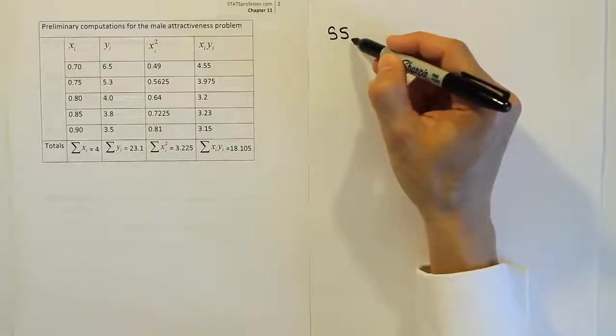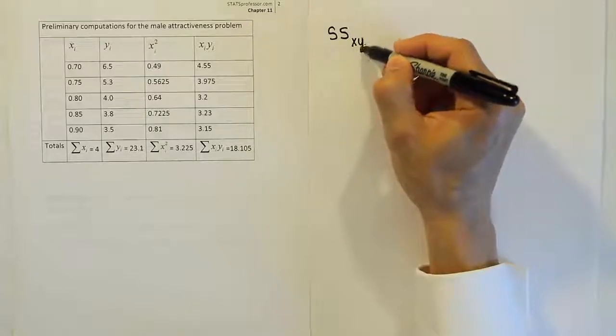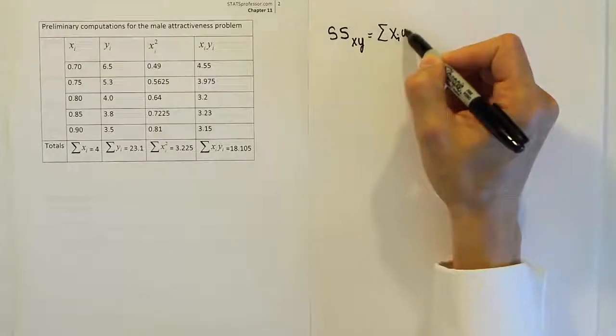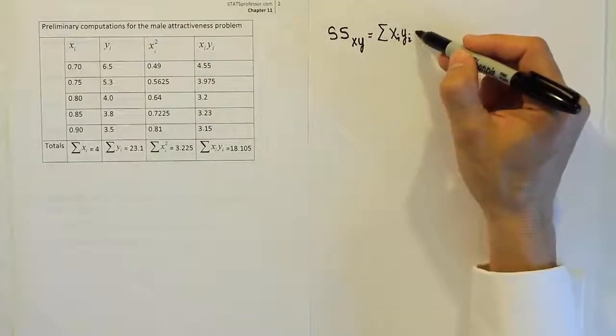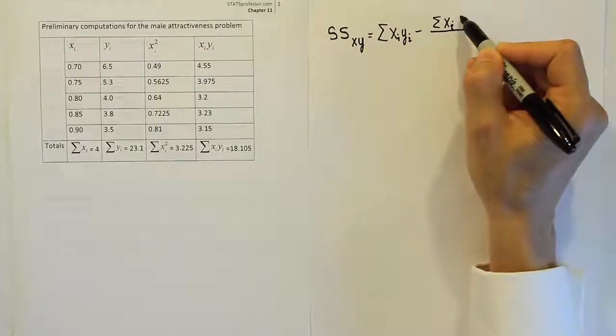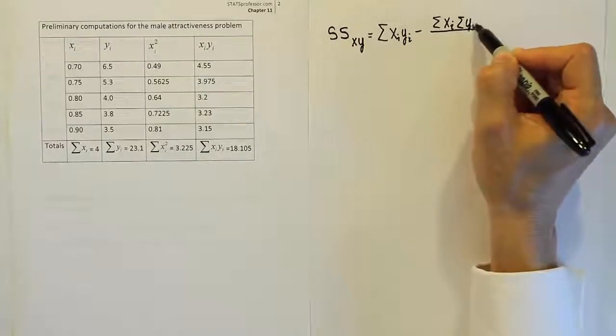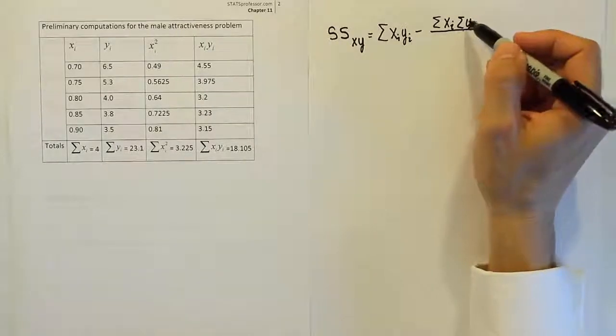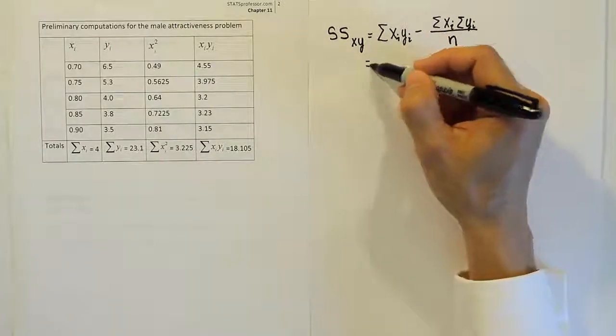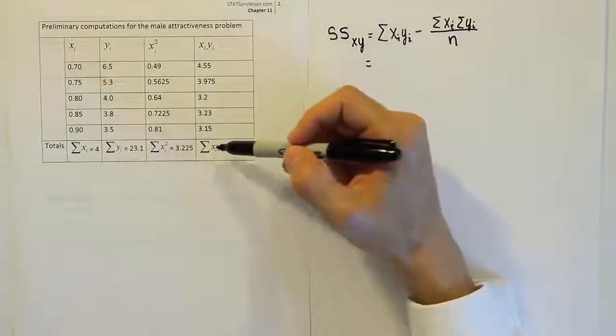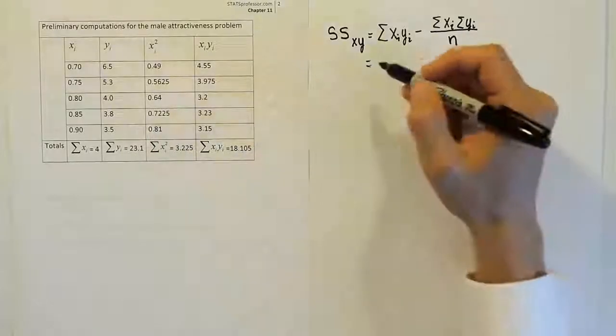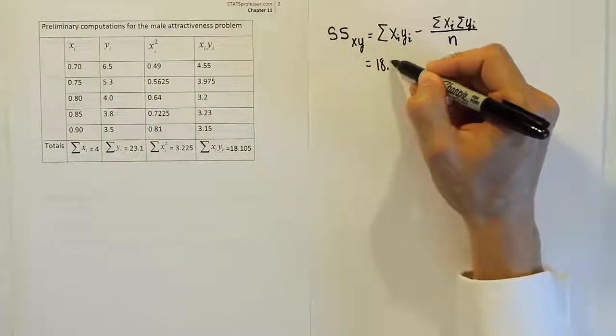Let's start with the first thing you need to calculate. We're going to come up with first the sum of square for the mixed term xy. The formula is the sum of the xi times yi terms as a product, then minus the sum of the xi value times the sum of the yi values. In our case, we have the sum of the xi times yi value. We have this column where we multiply the x and y values together, added them up, and got the answer 18.105.